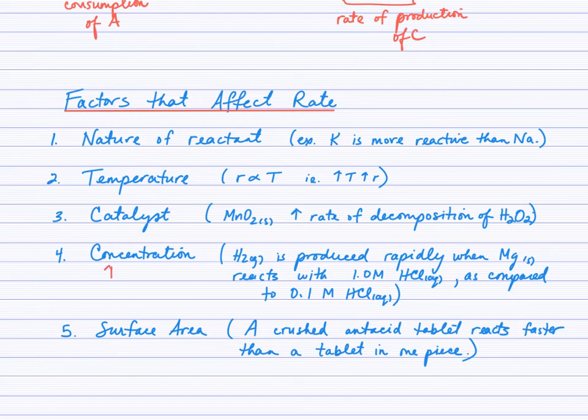To be clear here, when we increase concentration, we increase rate. When we increase surface area, we increase rate. When we increase temperature, we increase rate. And a catalyst serves to increase rate. We'll explore the why behind those when we study collision theory.